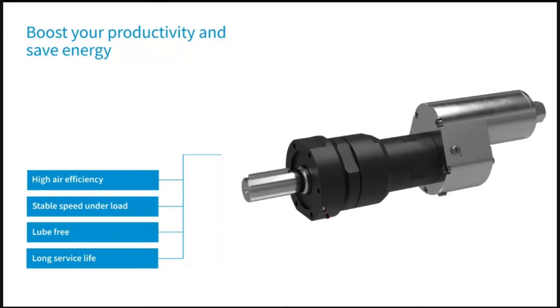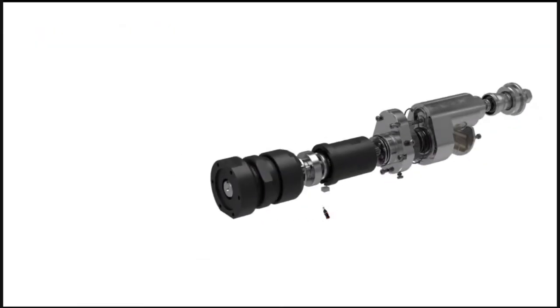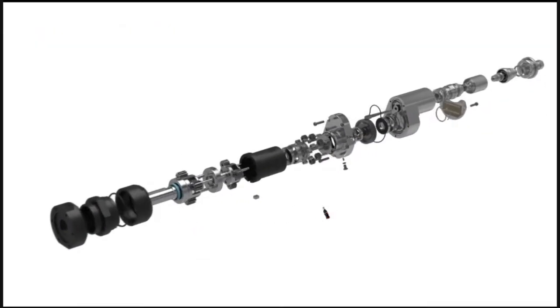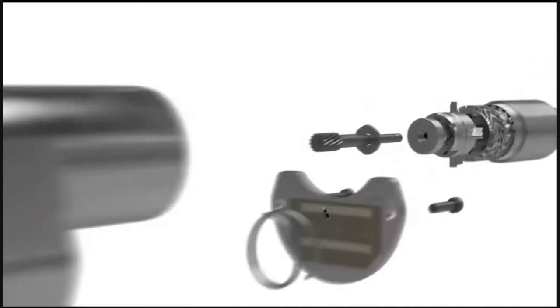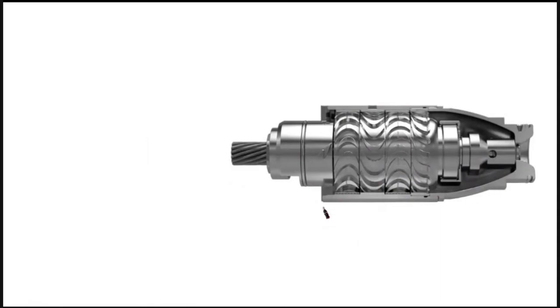The TZB is geared for high torque applications and capable of maintaining stable speed under load. The two-stage turbine ensures a compact motor with a high power to weight ratio.